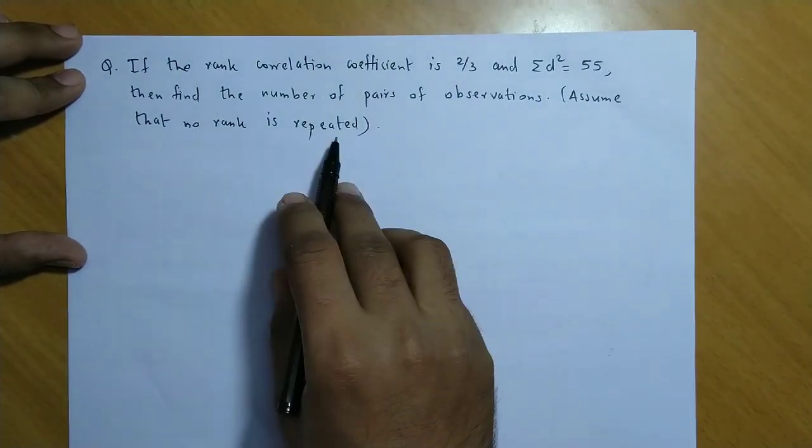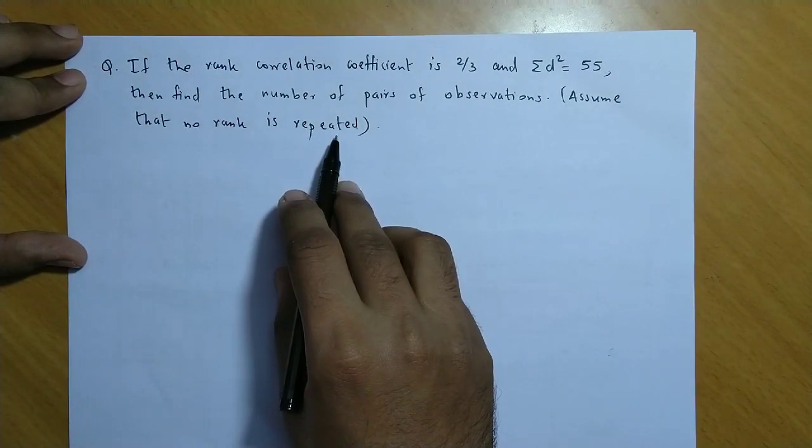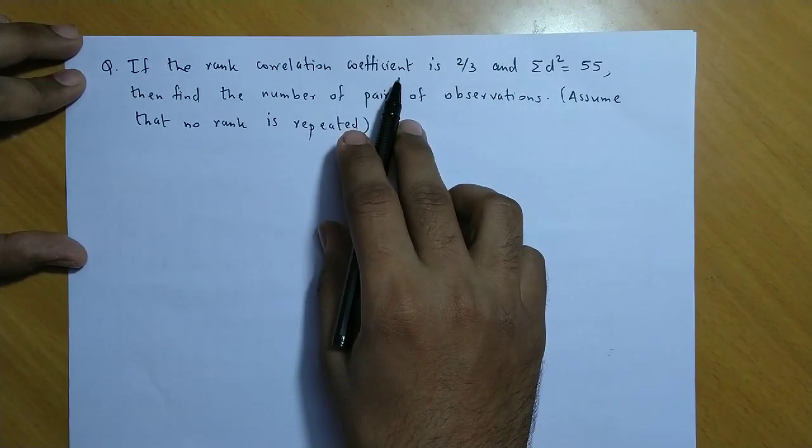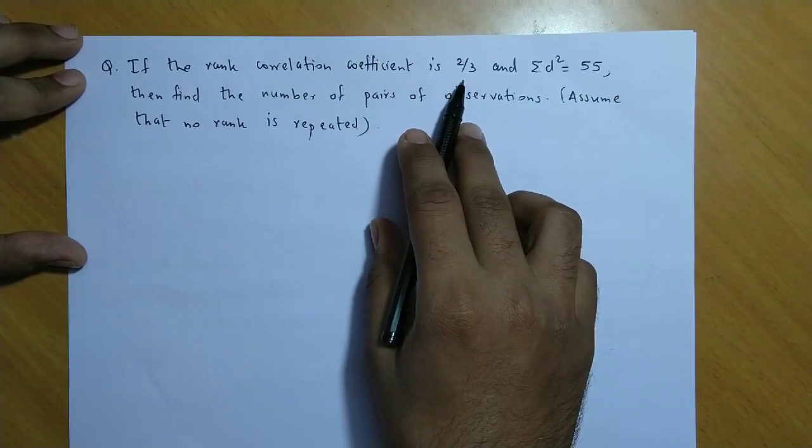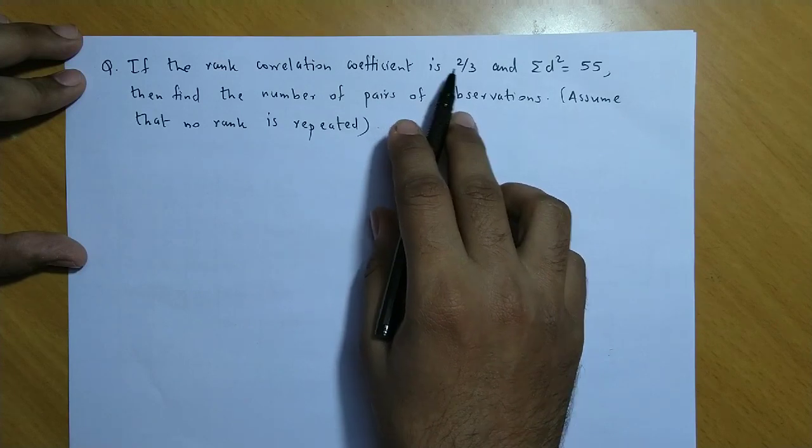Assume that no rank is repeated. Toh is question mein rank correlation coefficient, uski value, yani capital R ki value, di hui hai 2 by 3.